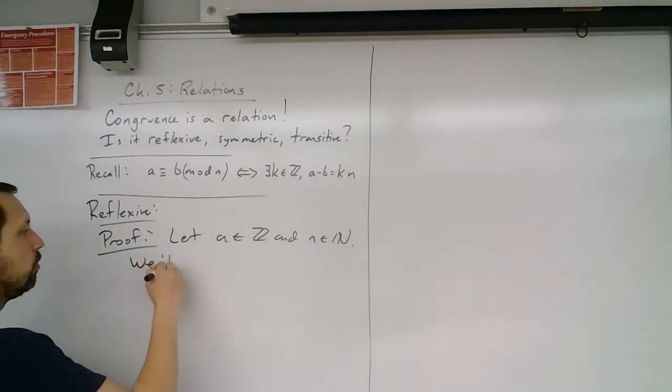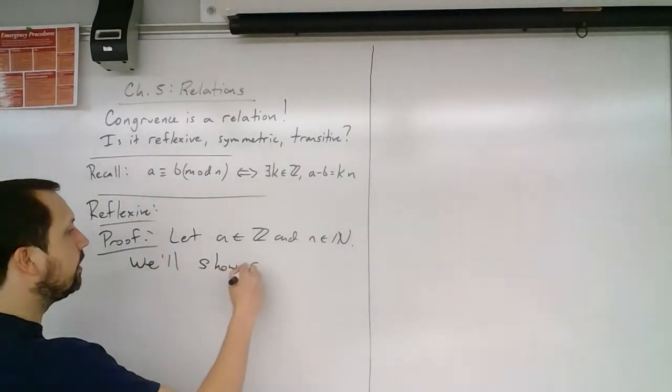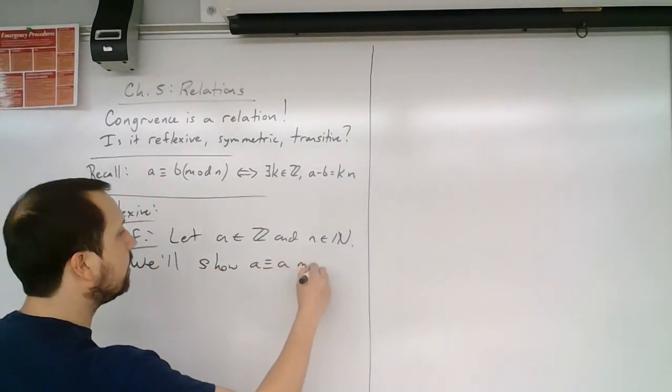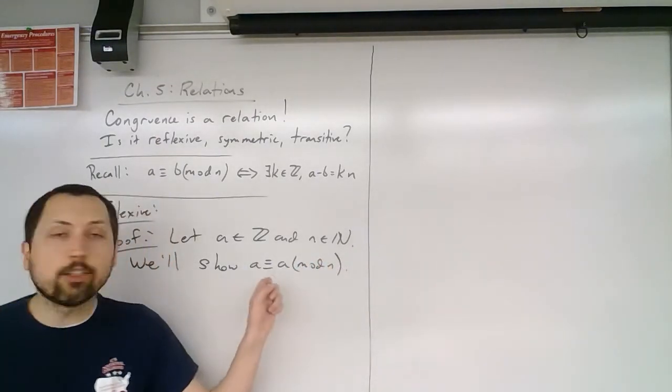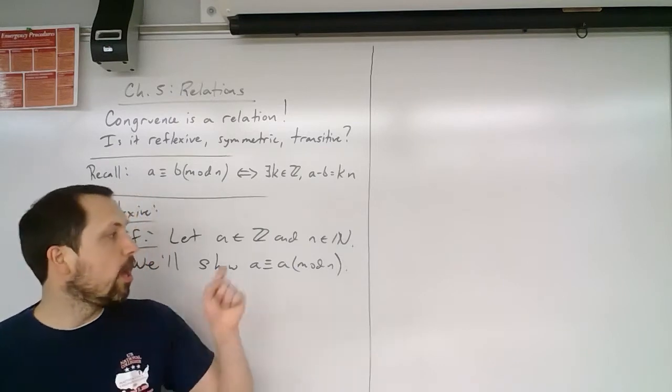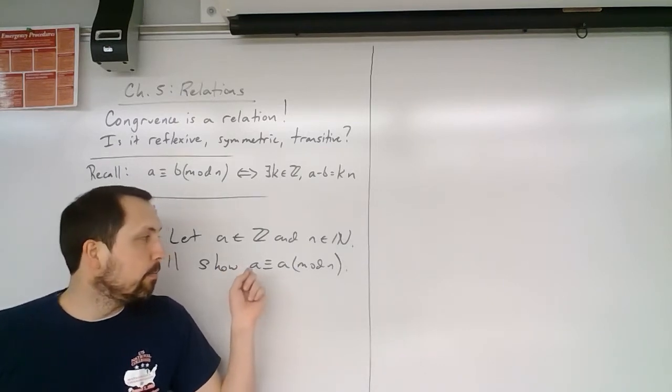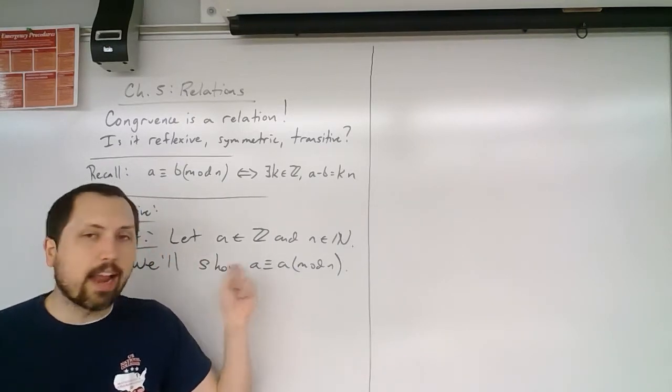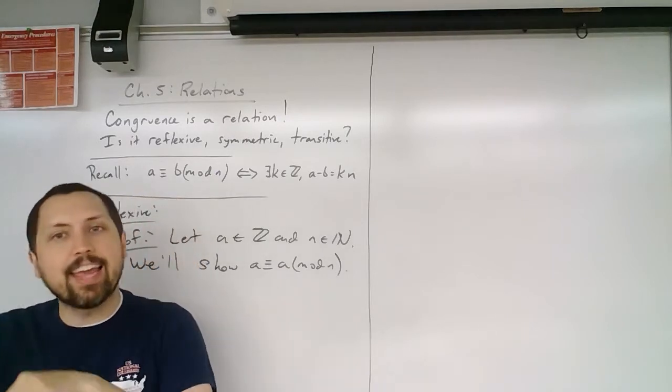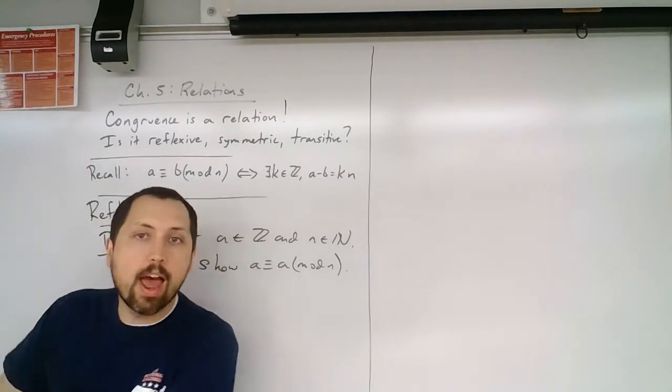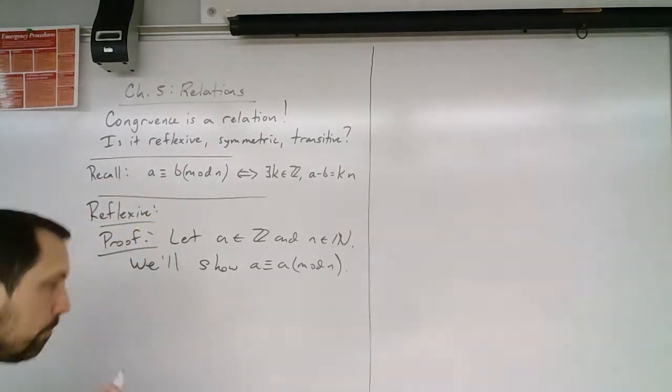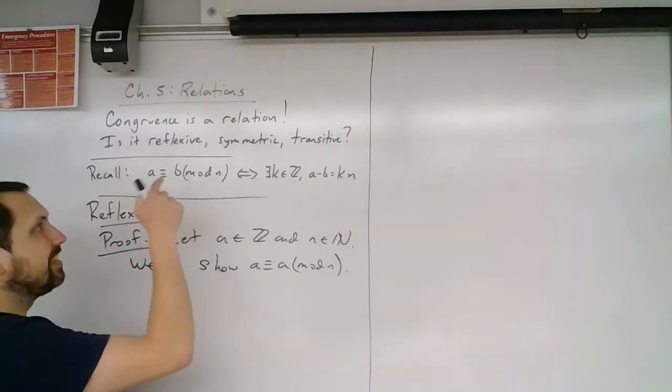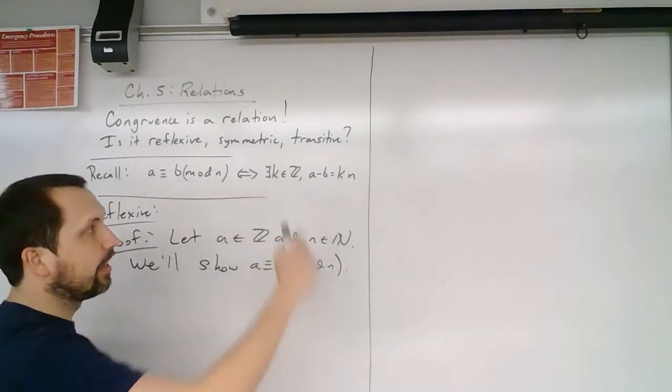We'll show that a is congruent to a mod n. We'd like to show this. Remember, we can't assume this is true. So if you're like, oh well, a is congruent to a mod n, so that means a minus a is equal to n times whatever, that's not good. We want to be able to get this as our conclusion. We do want to use this, though, to help us get there.